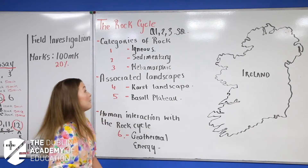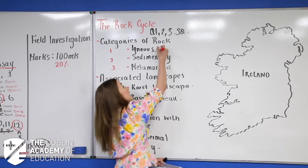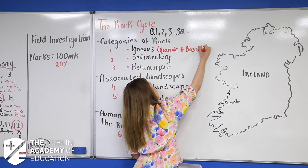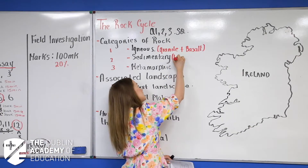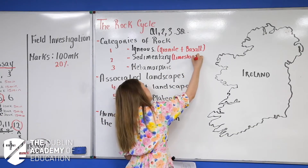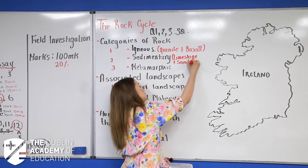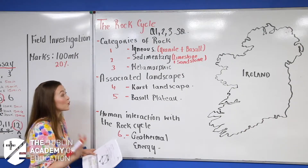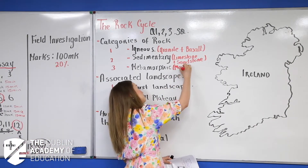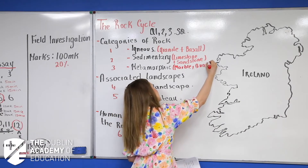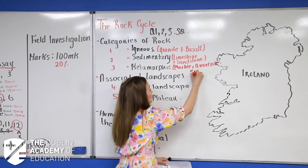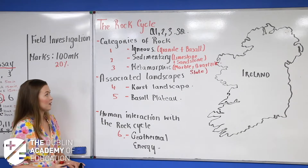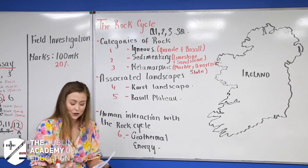You might pause the video and write down whether you know two igneous rocks, two sedimentary rocks, or two metamorphic rocks. Our igneous rocks are granite and basalt. Our sedimentary rocks are limestone and sandstone. Our metamorphic rocks are marble, quartzite, and slate — you could also do schist. Those are our first three things we know: our categories of rock.